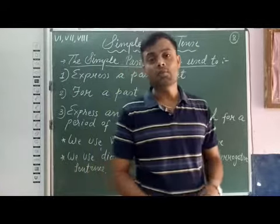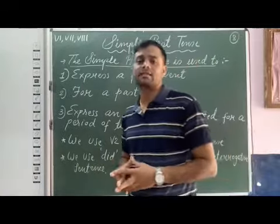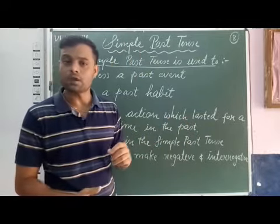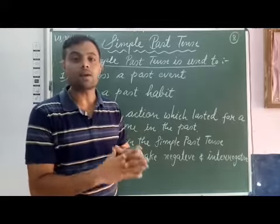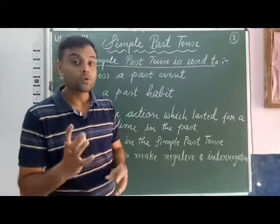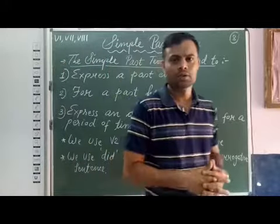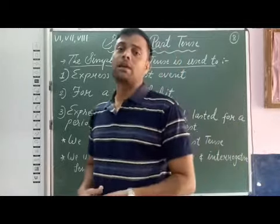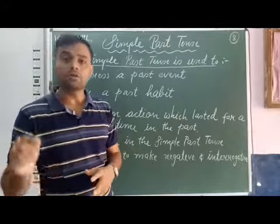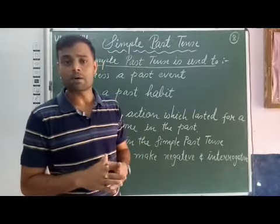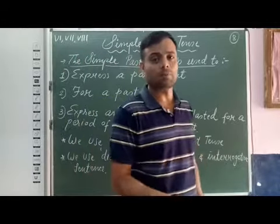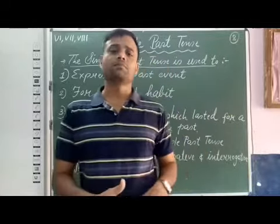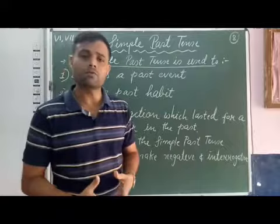Another important point: to make negative and interrogative sentences, we use 'did' as a helping verb. If you remember, in simple present tense we also use a helping verb for negative and interrogative. In simple past tense, we use 'did' as the helping verb. And when we use 'did' as a helping verb in negative and interrogative sentences, we remove V2 and we have to use V1.